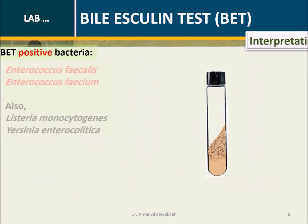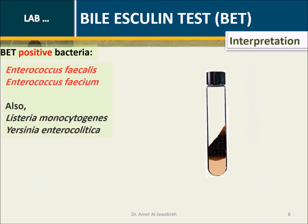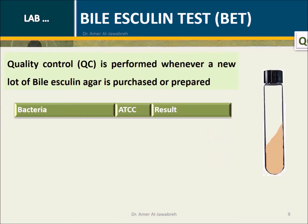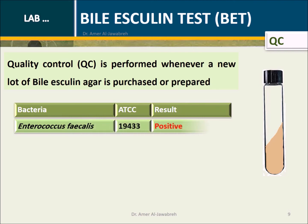Interpretation: Bile-positive bacteria show blackening of the slant. QC is performed whenever a new lot of biological agar is purchased or prepared. The list below contains QC bacteria and expected results.